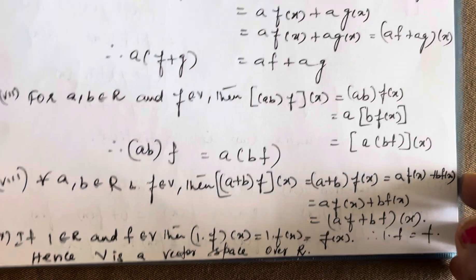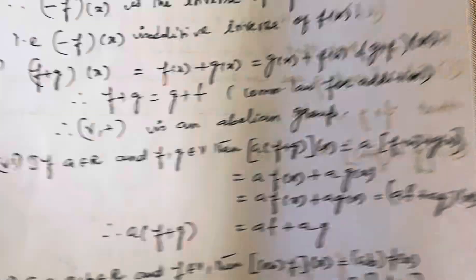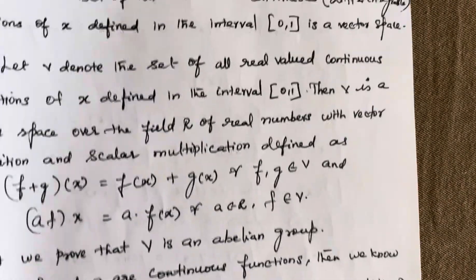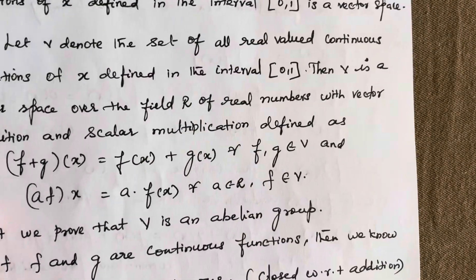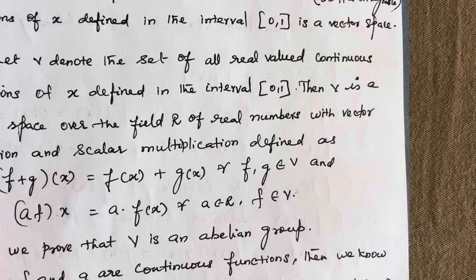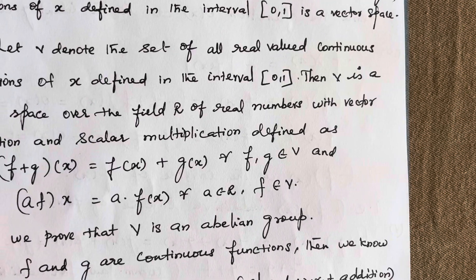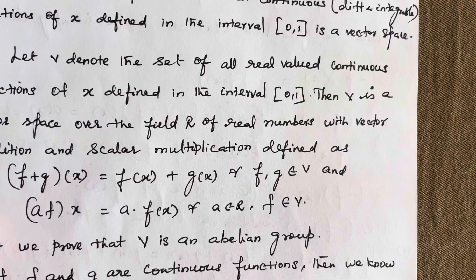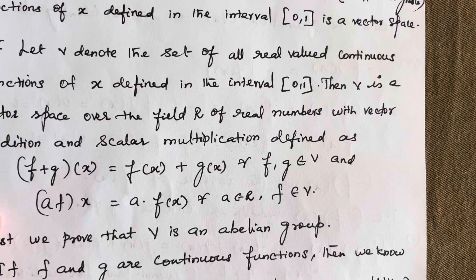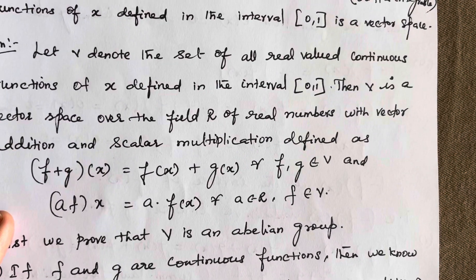We have already proved it is an abelian group and all scalar axioms are satisfied. Hence, the set of all real-valued continuous functions of x defined in the interval [0,1] is a vector space.